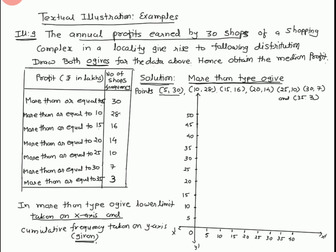We plot these points on the graph: (5, 30), (10, 28), (15, 16), (20, 14), (25, 10), (30, 7), (35, 3). We place point (5, 30) — here is 5 on the x-axis and 30 on the y-axis, so we take that point.